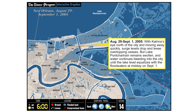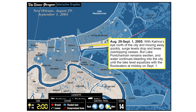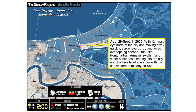From the 29th of August to the 1st of September, with Katrina's eye moving north of the city, storm surge levels dropped and the overtopping of levees ceased. However, the lake remained swollen and water continued to bleed into the city through the damaged levees.